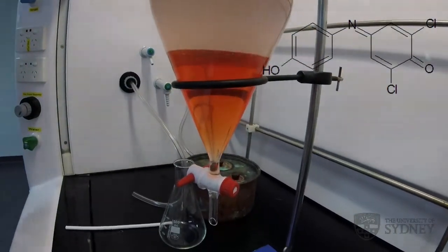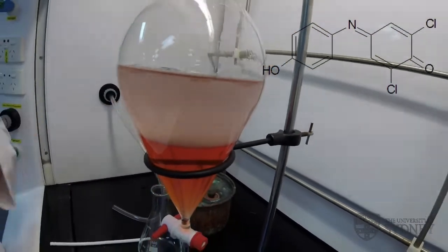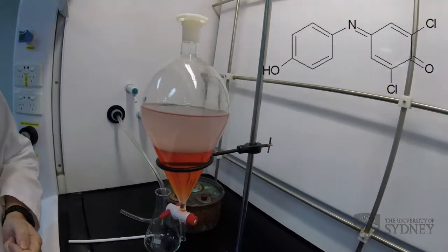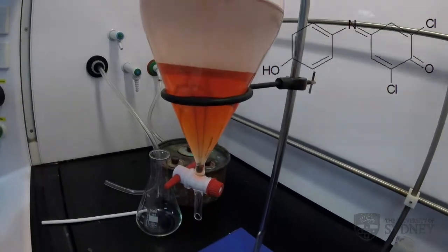And see, that's caused a little bit of emulsification—the cloudiness inside the separatory funnel—so we need to leave that to separate into two clean layers. But you can also see that the neutral acidic form of the dye has extracted into the organic phase as we expected.